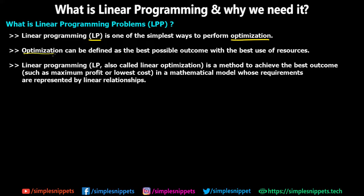Optimization can be defined as the best possible outcome with the best use of resources. When you say you have optimized your code or process, it means your process is giving you the best output by using resources in the best way. Linear programming, also called linear optimization, is a method to achieve the best outcome in a mathematical model whose requirements are represented by linear relationships — mathematical relationships in which two or more quantities are related and can usually be depicted by a single line.